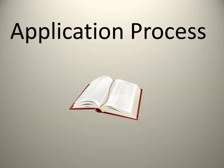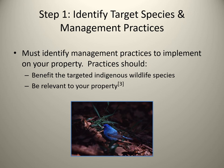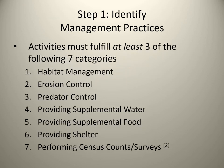Next, the application process. Your first step is to identify a target species and identify management practices that benefit that species. The practices you select should benefit the targeted indigenous wildlife species and be relevant to your property. For example, you would not want to manage for bighorn sheep in the coastal prairies of Texas. You will also need to identify management practices, and these activities must fulfill at least three of the seven categories.